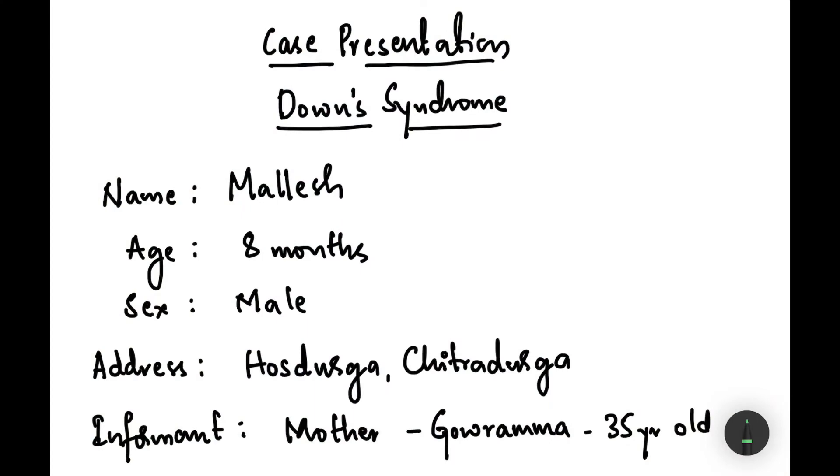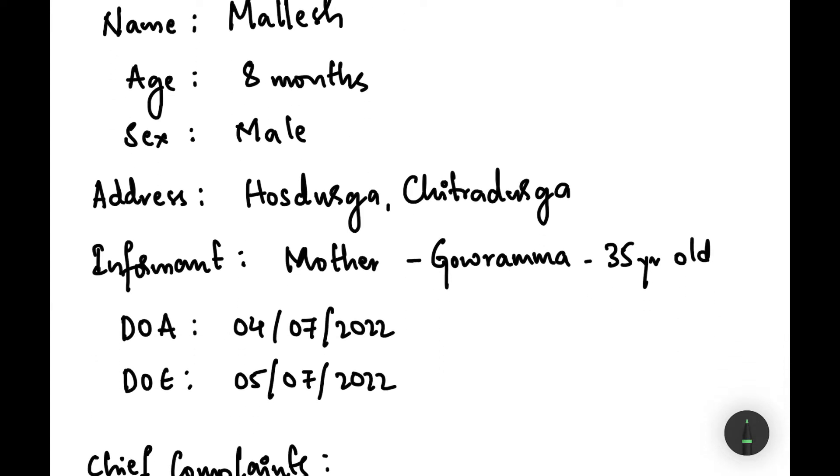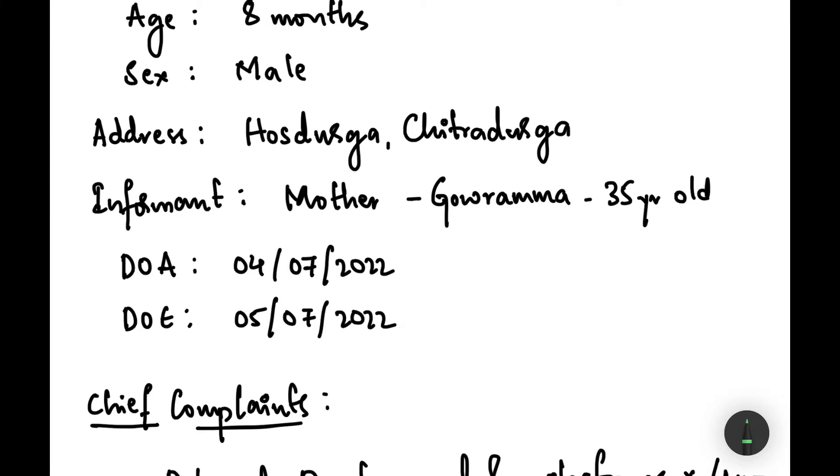Hey guys, welcome to Mattan. This is an exclusive case presentation on Down syndrome. The patient is an eight-month-old male baby named Malish from Hosadurga, Chitradurga. The informant is the mother named Gowramma, age 35 years old. Date of admission was 4th of July 2022, and the patient was examined on 5th of July 2022.